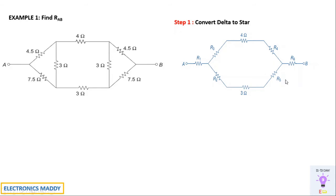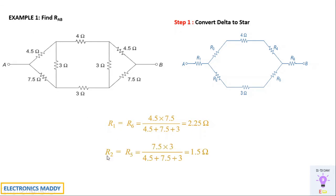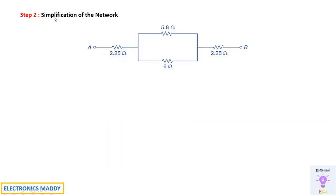Naming the resistors R1 through R6, we apply the delta-to-star formula. R1 = R6 = (4.5 × 7.5) / (4.5 + 7.5 + 3). R2 = R5 = (7.5 × 3) / (4.5 + 7.5 + 3). R3 = R4 = (4.5 × 3) / (4.5 + 7.5 + 3). These give the equivalent star resistance values for both delta networks.